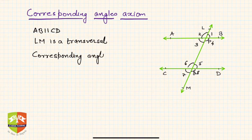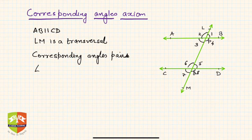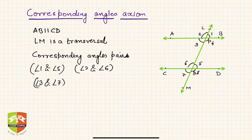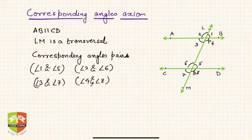The four pairs of corresponding angles are: angle one and angle five — pair number one; angle two and angle six — pair number two; angle three and angle seven — pair number three; and angle four and angle eight — pair number four.